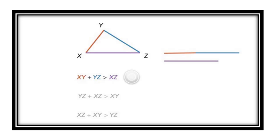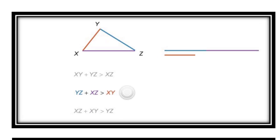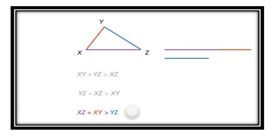Consider first, xy plus yz is greater than xz. Also, yz plus xz is greater than xy. And finally, xz plus xy is greater than yz.